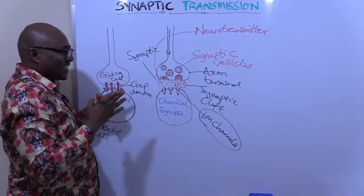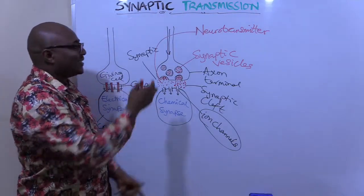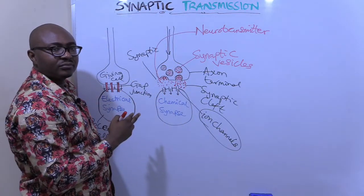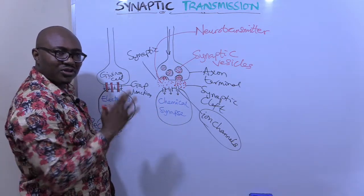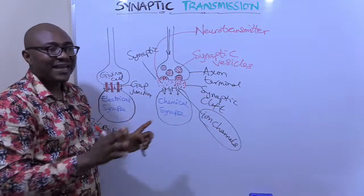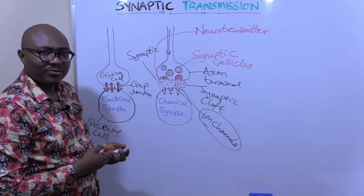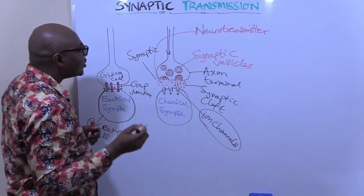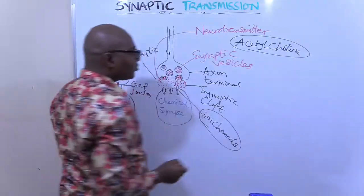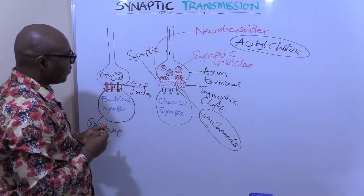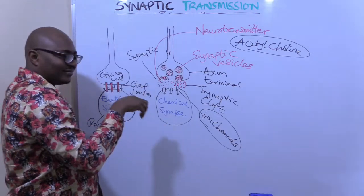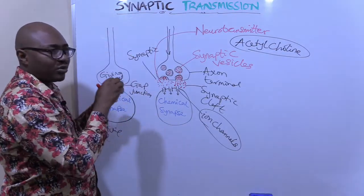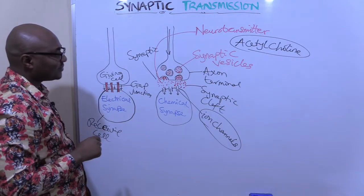The neurotransmitter is the agent that will transfer the action potential or electrical impulse from one nerve to the other nerve — and if it's a muscle, to the muscle. That's why it's called a neurotransmitter. They are chemical substances. One of the most commonly known neurotransmitters is called acetylcholine. Very common in a lot of nerves. The synaptic vesicles are vesicles that contain acetylcholine — loaded into the synaptic vesicle.